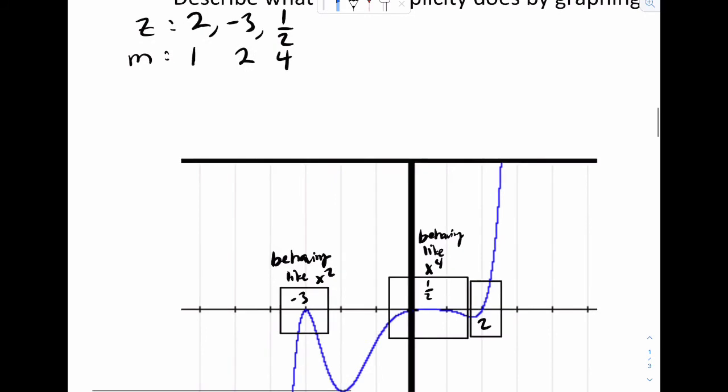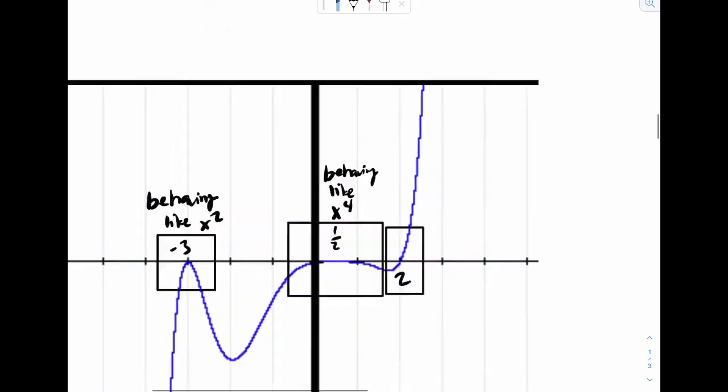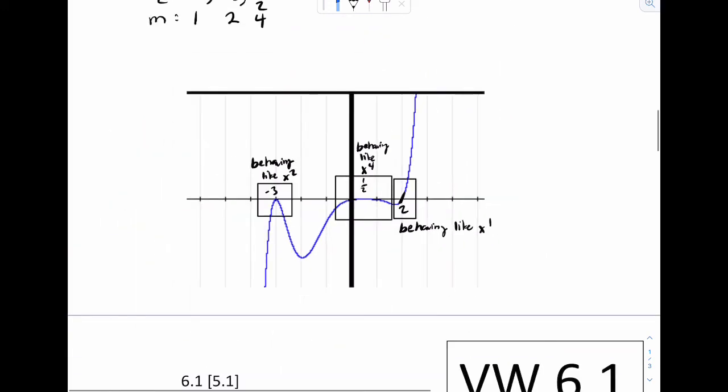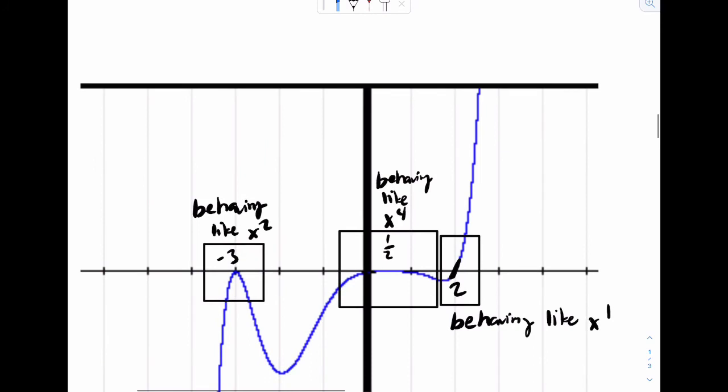And for the last one, notice how it's just crossing through. So if we really zoom in, it's basically like a line through right here. So right here, it's behaving like x to the one. So multiplicity is a way to understand what is happening at the actual intercept. So notice how if it's two, it's like an x squared. It's creating like a parabola. X to the fourth is making a wider parabola. And then x to the one is making a line. Like it's crossing straight through.